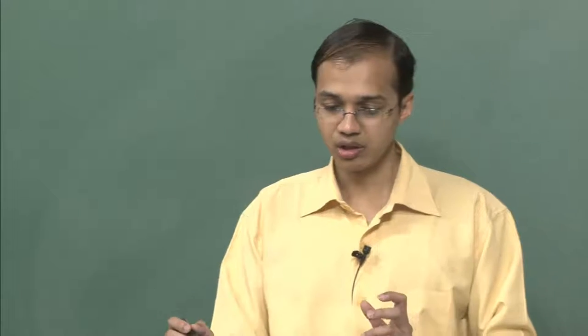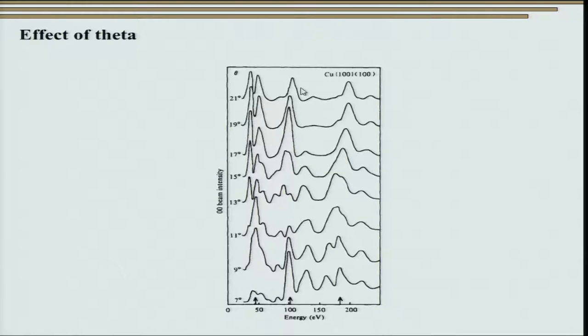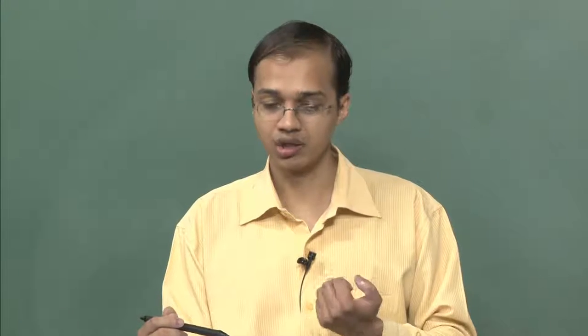It is very important to study the effect of energy and angle on the intensity. For example, for the copper 100 surface, the peaks not only change their position but also their profile with changes in incidence angle. This essentially indicates that as we change the incidence angle, we get not only a change in diffraction intensity but additional scattering events. All these scattering events must be accounted for when we try to back-calculate the structure from the LEED data.